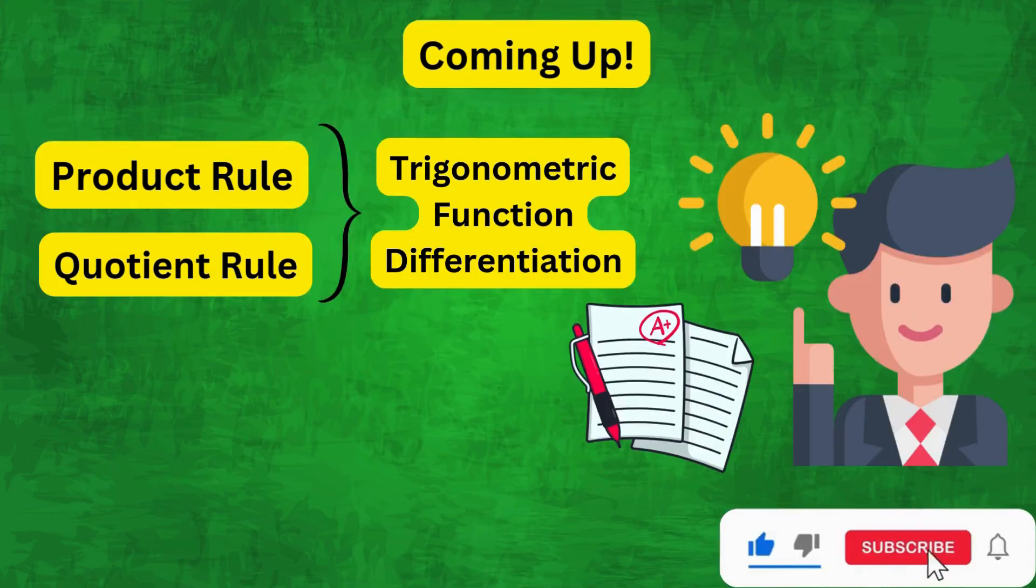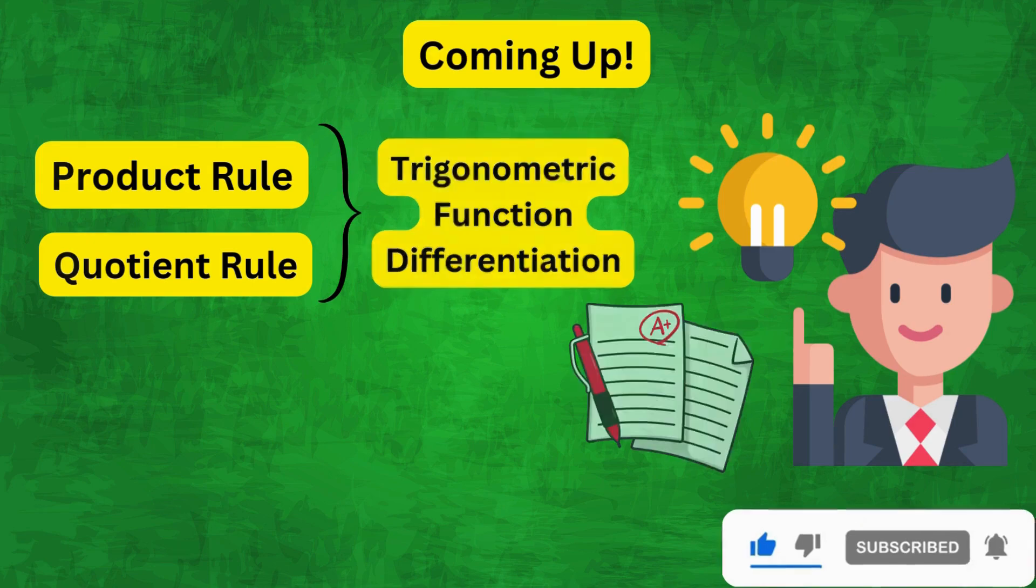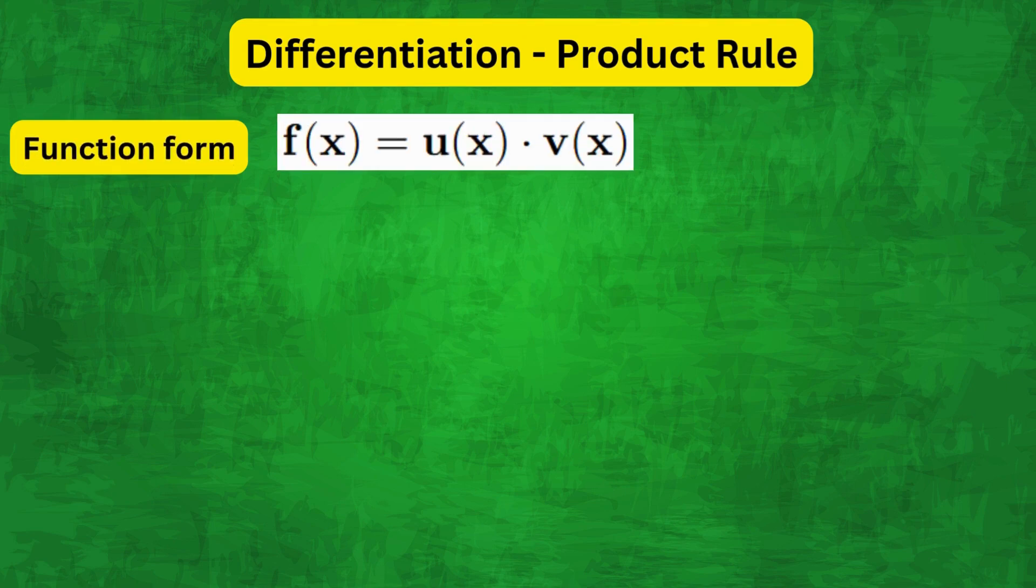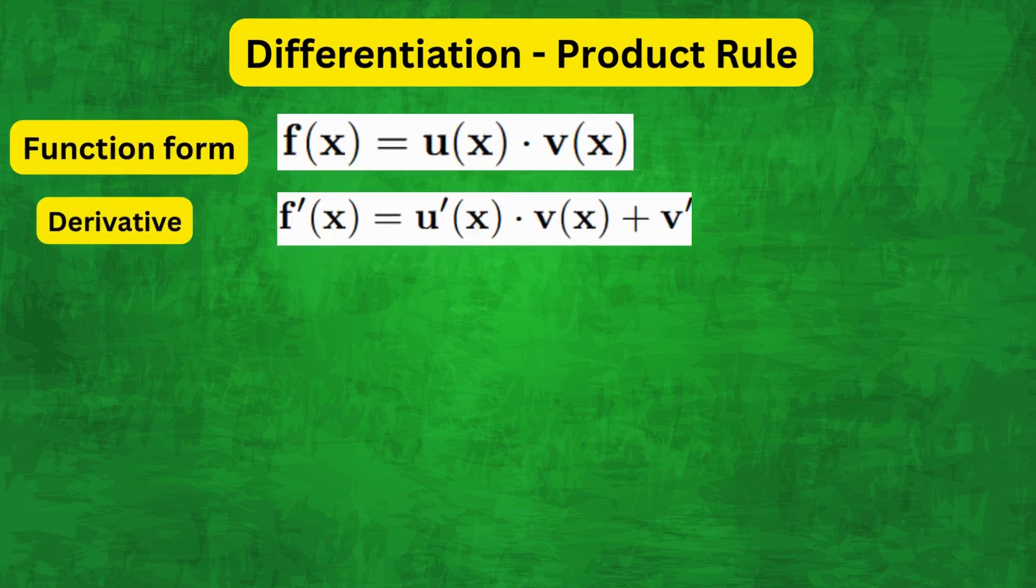Now the product rule states that if f(x) equals u(x) times v(x), then f'(x) is equal to u'(x)v(x) + v'(x)u(x).